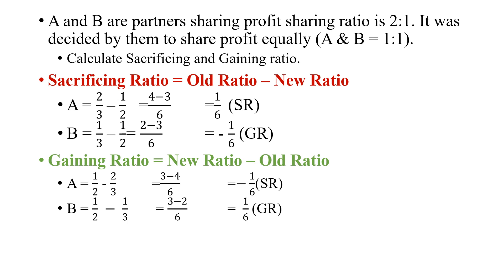Alternatively, using the gaining ratio formula GR = NR − OR: For A: 1/2 − 2/3 = (3−4)/6 = −1/6 — a negative result here means it is a sacrificing ratio for A. For B: 1/2 − 1/3 = (3−2)/6 = 1/6 — this is the gaining ratio for B. You can use either the sacrificing ratio or gaining ratio formula — only one formula is needed.